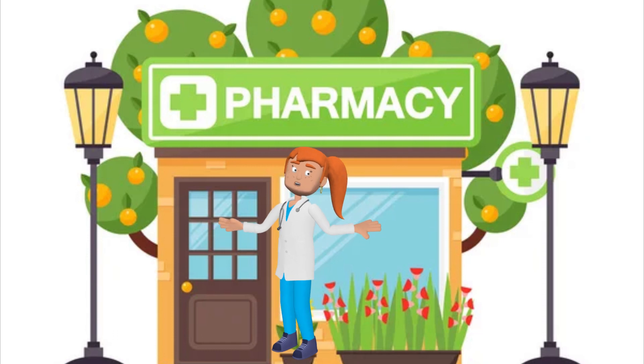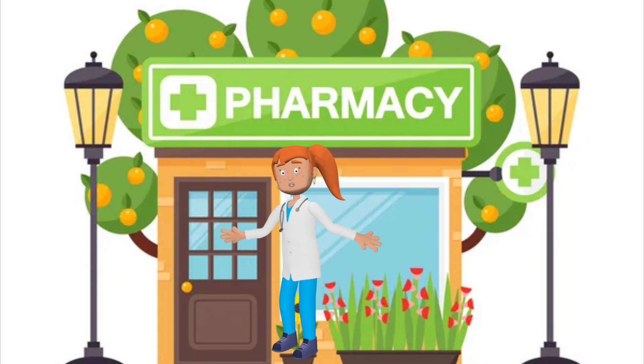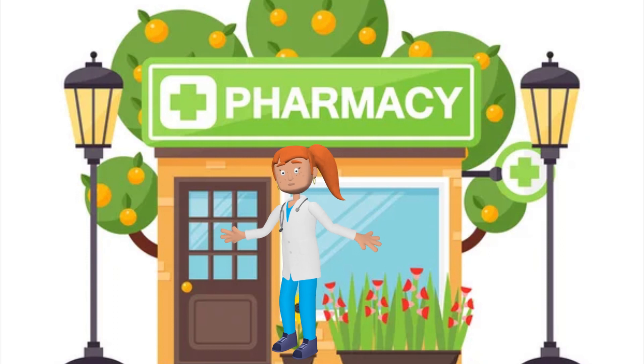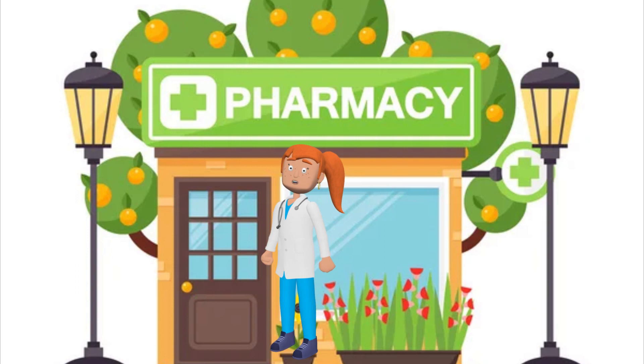Module 1: Perform Workplace Housekeeping. The trainee should be able to define community pharmacy workplace practice, interpret SOPs, and implement housekeeping procedures.